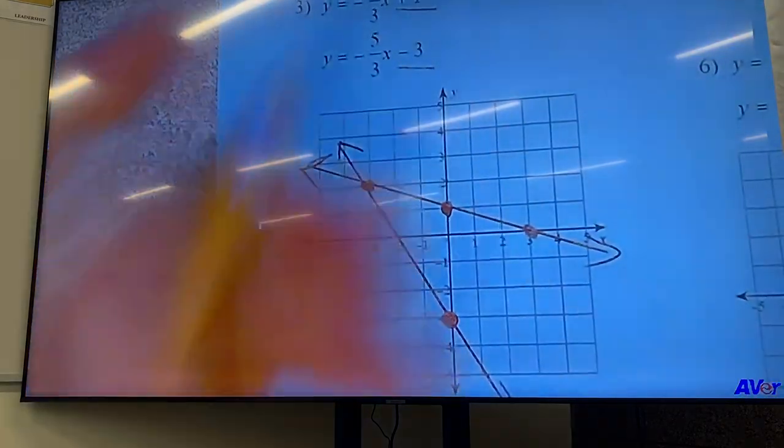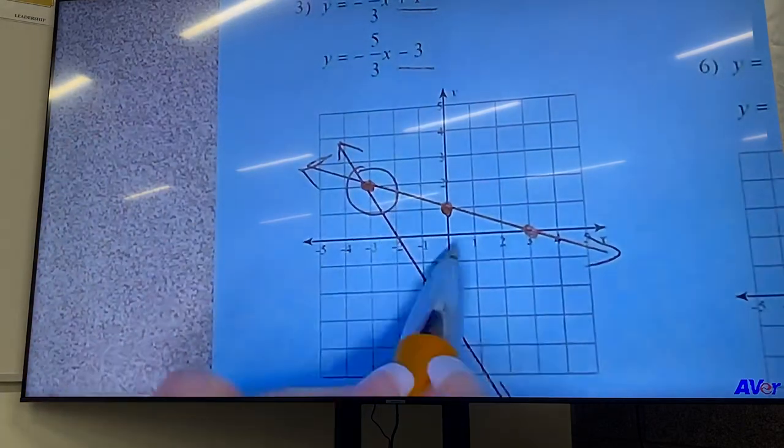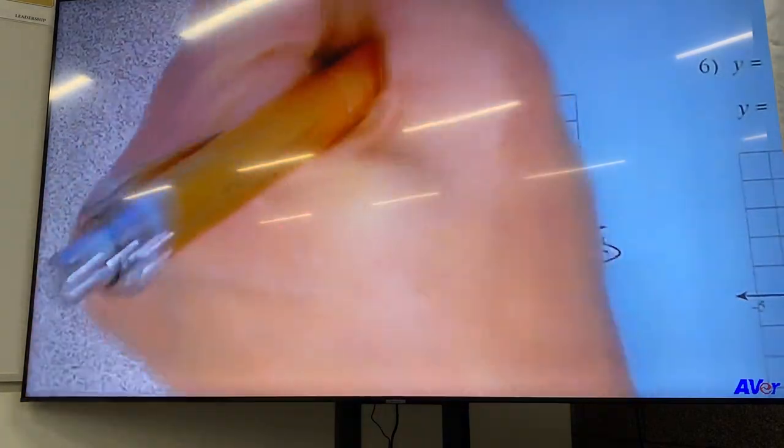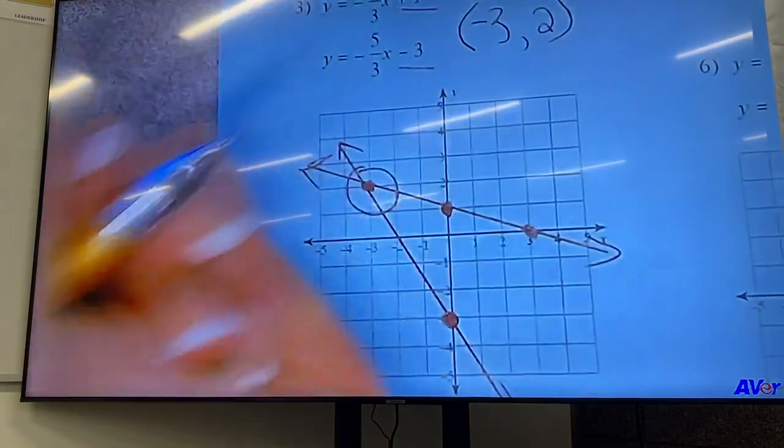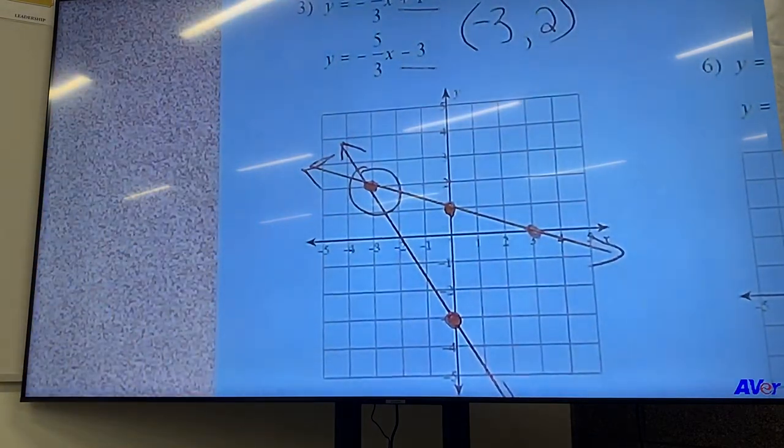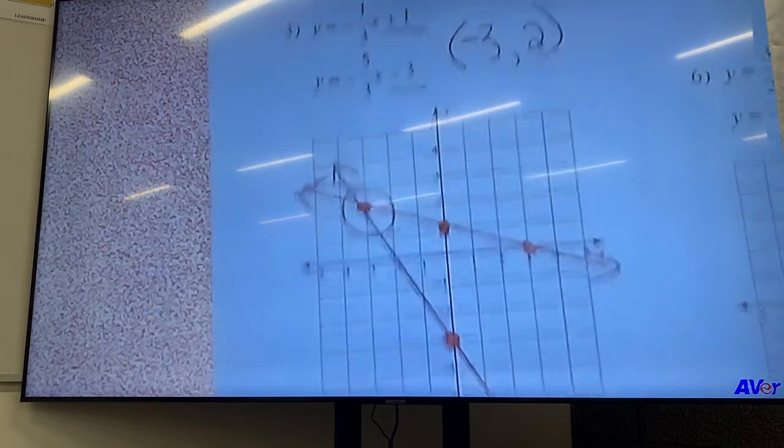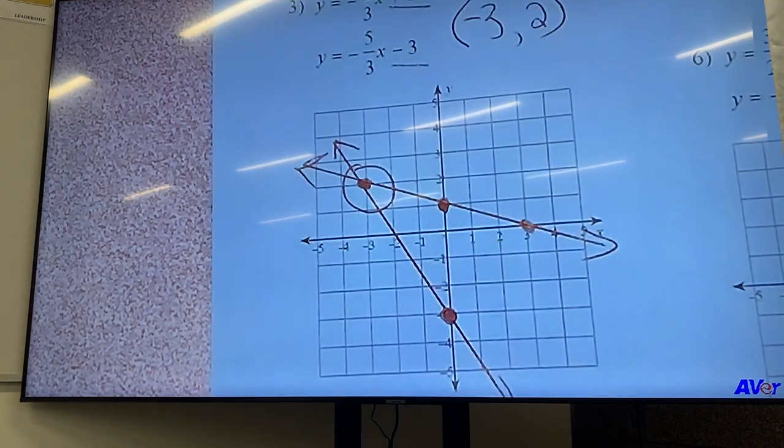And this is where they cross. So that is it. Negative three, three, two.